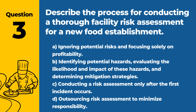Question 3. Describe the process for conducting a thorough facility risk assessment for a new food establishment. a. Ignoring potential risks and focusing solely on profitability. b. Identifying potential hazards, evaluating the likelihood and impact of these hazards, and determining mitigation strategies. c. Conducting a risk assessment only after the first incident occurs. d. Outsourcing risk assessment to minimize responsibility. Answer: b. Identifying potential hazards, evaluating the likelihood and impact of these hazards, and determining mitigation strategies. A proactive approach is essential for ensuring food safety from the start.